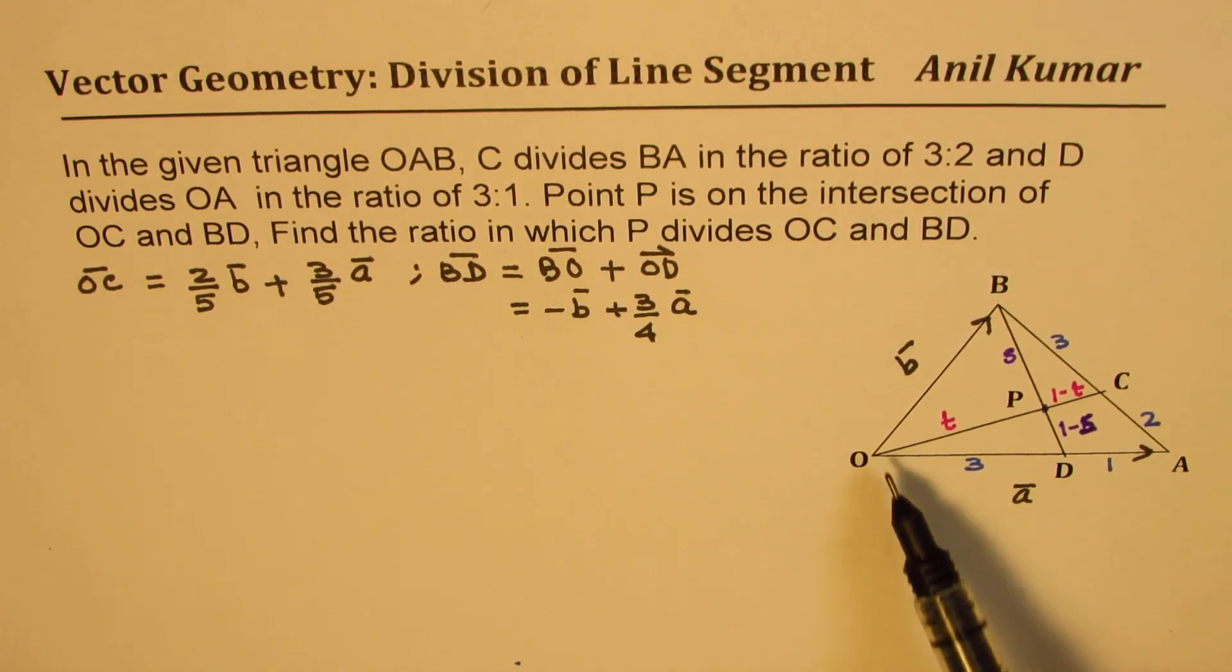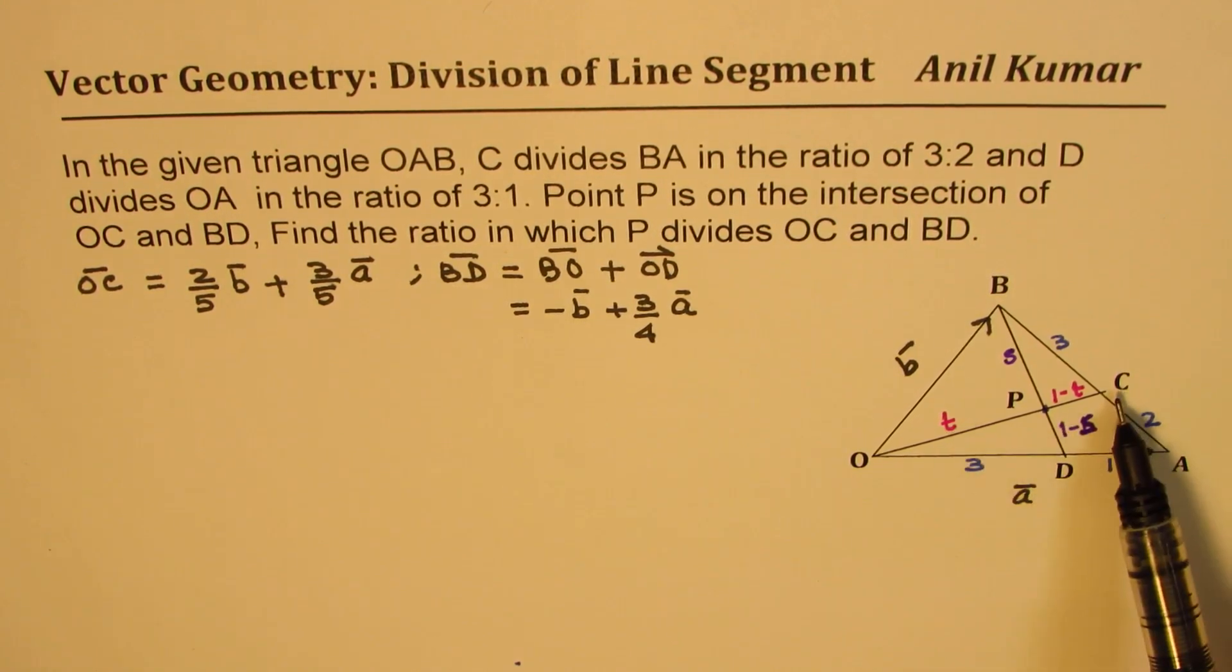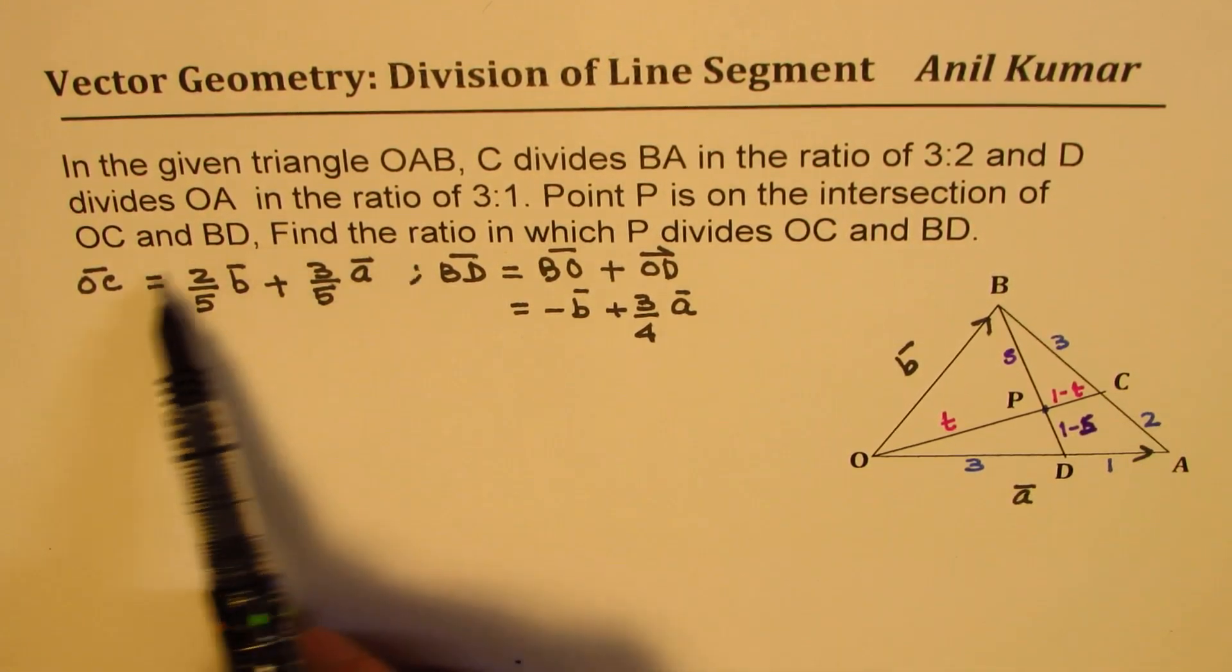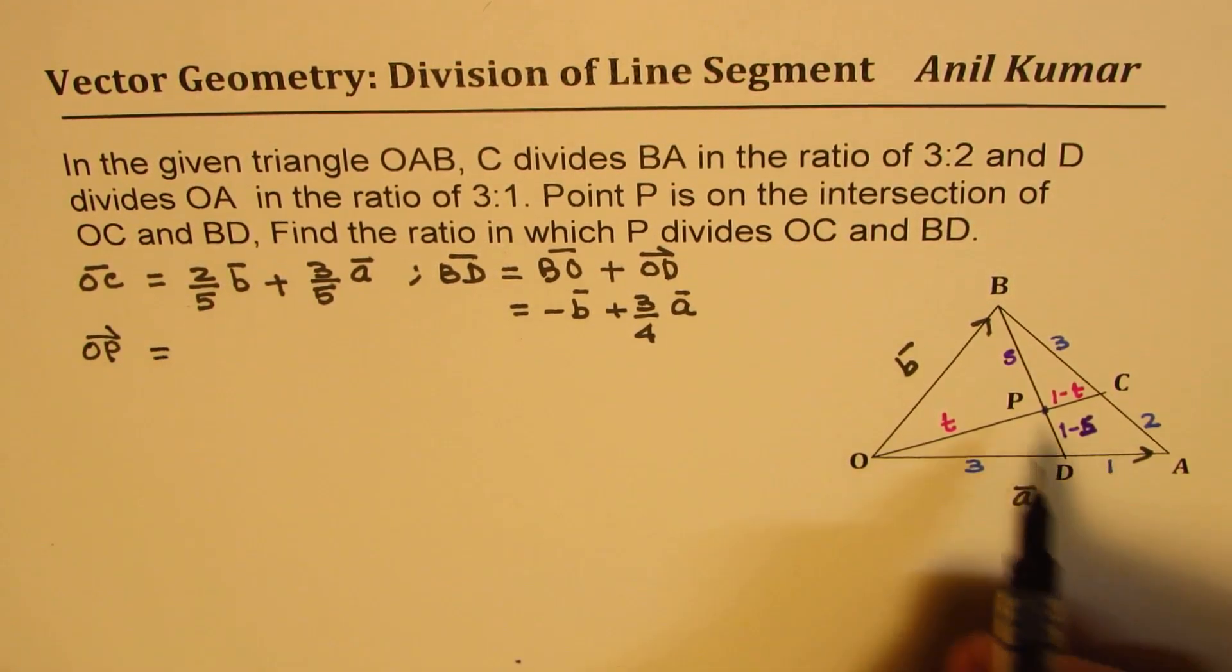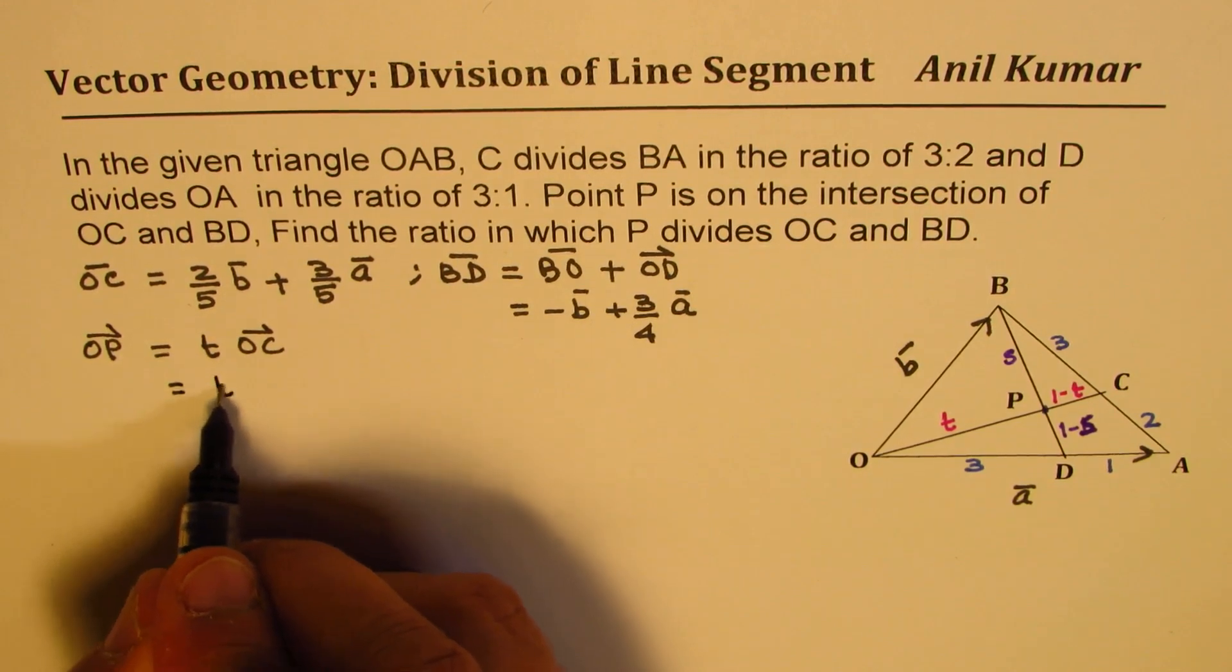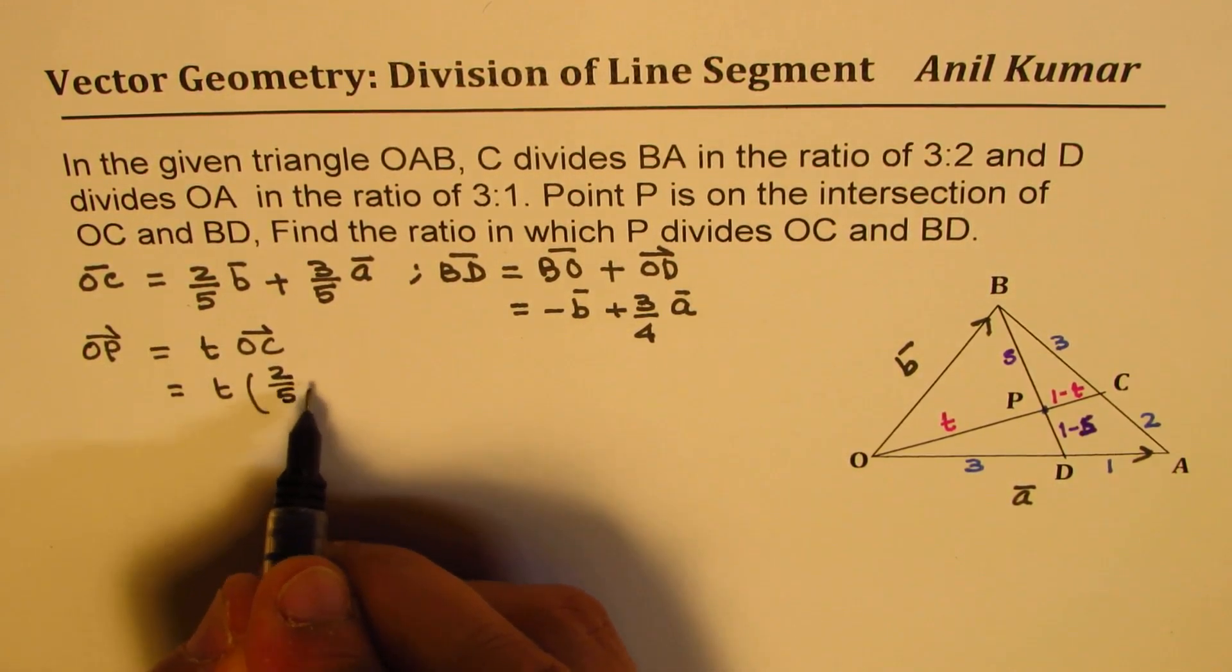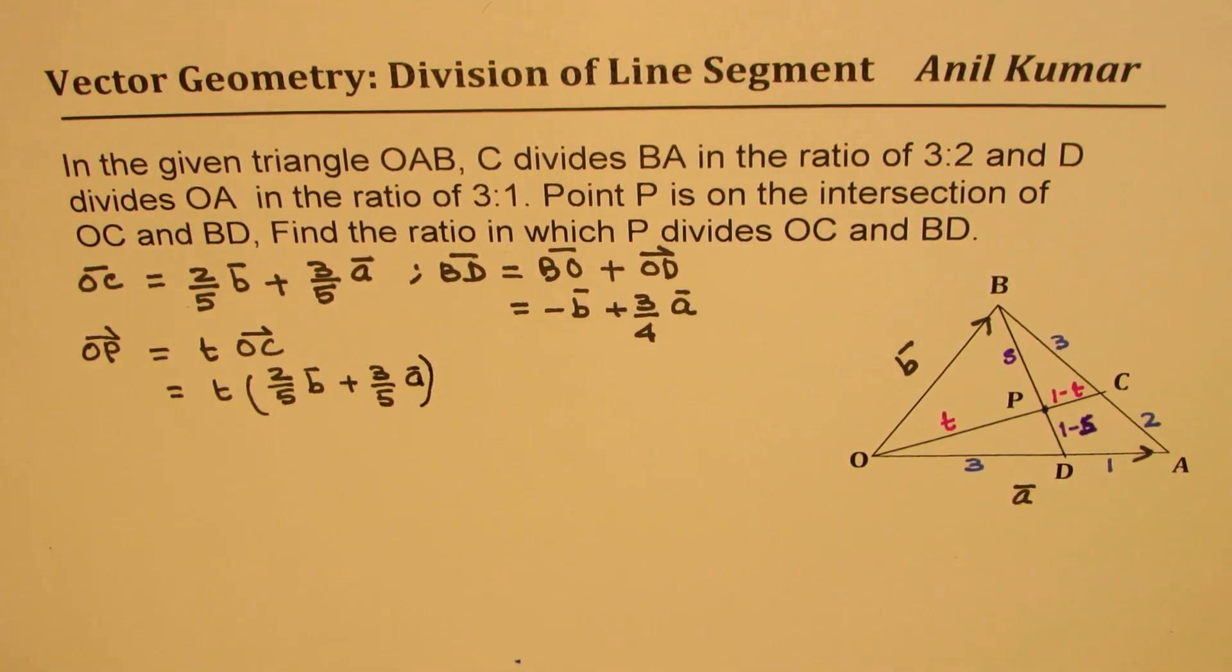Now, let's look into OP. So if I see OP from this direction, in that case, OP can be written as T times OC, right? So we have all this. We can write OP as T times OC, which is T times (2/5)B + (3/5)A. So we get OP in this fashion.